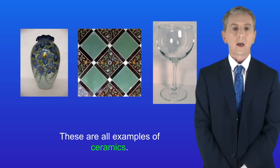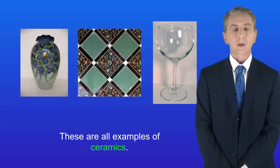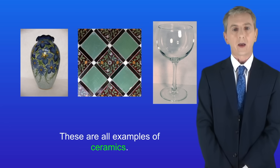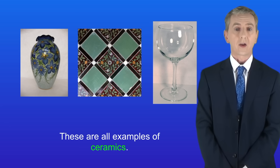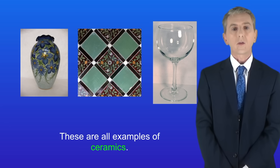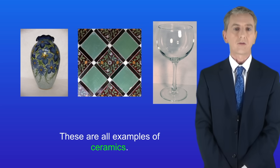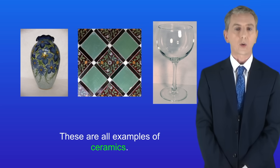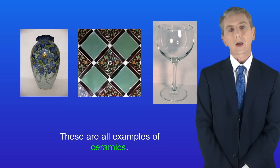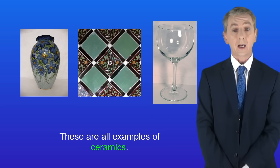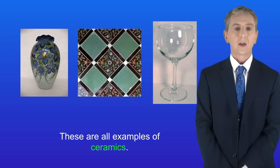Here is a vase, some kitchen tiles and a wine glass, and these are all examples of ceramics. Now there are lots of different categories of ceramics and we're going to be looking at two: glass and clay ceramics. So let's get started.